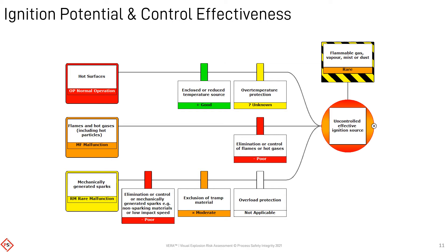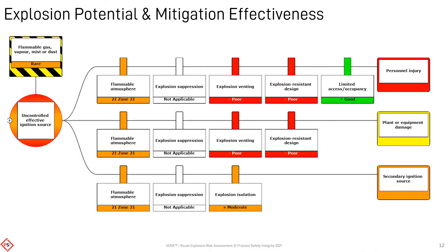Not all barriers will be applicable, depending on the age or design of the facility, and the effectiveness of some barriers may not be known, which should be a cause for concern. The aggregate likelihood of a credible and effective ignition source combined with the potential for a flammable atmosphere indicates the possibility of an explosion.